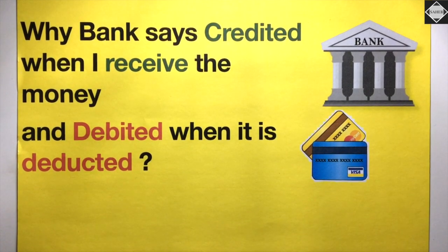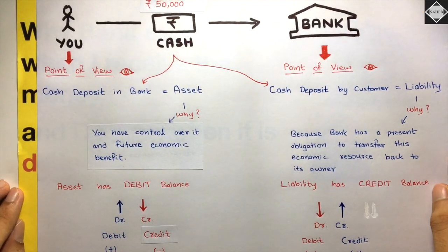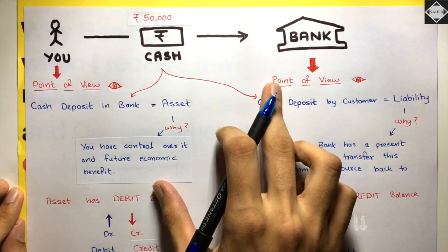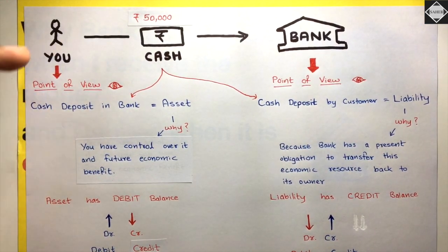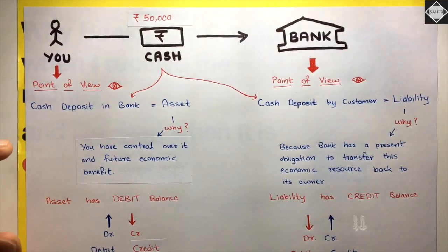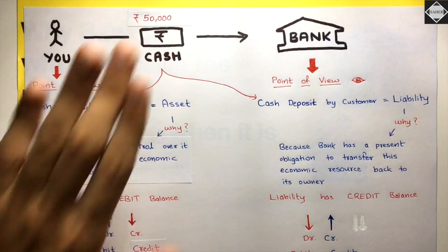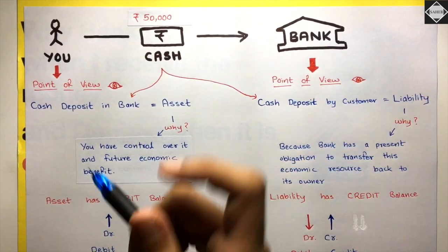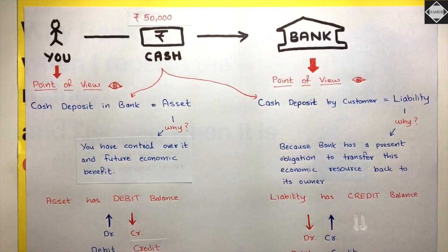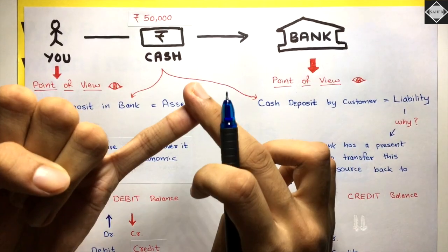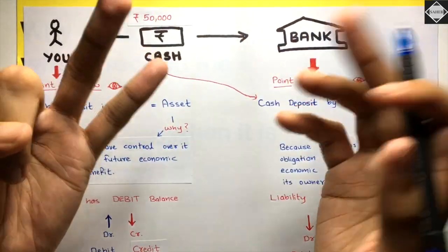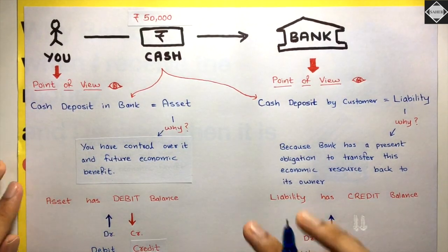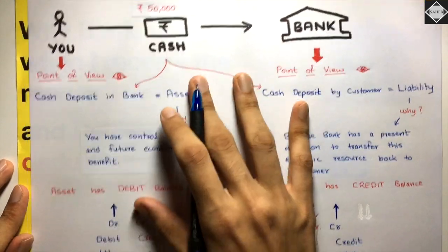Let's understand the logical reasoning. Say you deposited 50,000 in your bank. From your point of view, cash has decreased and bank balance has increased. So you credit the cash account. Your bank account, from your point of view, is an asset — because you have control over it and there is future economic benefit from it; you can invest it or generate income.